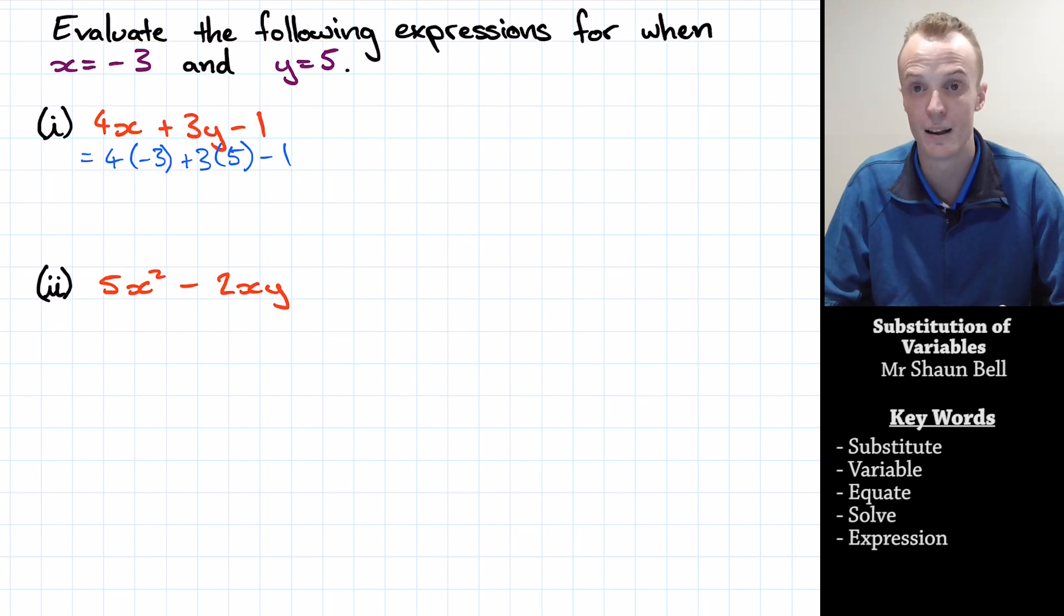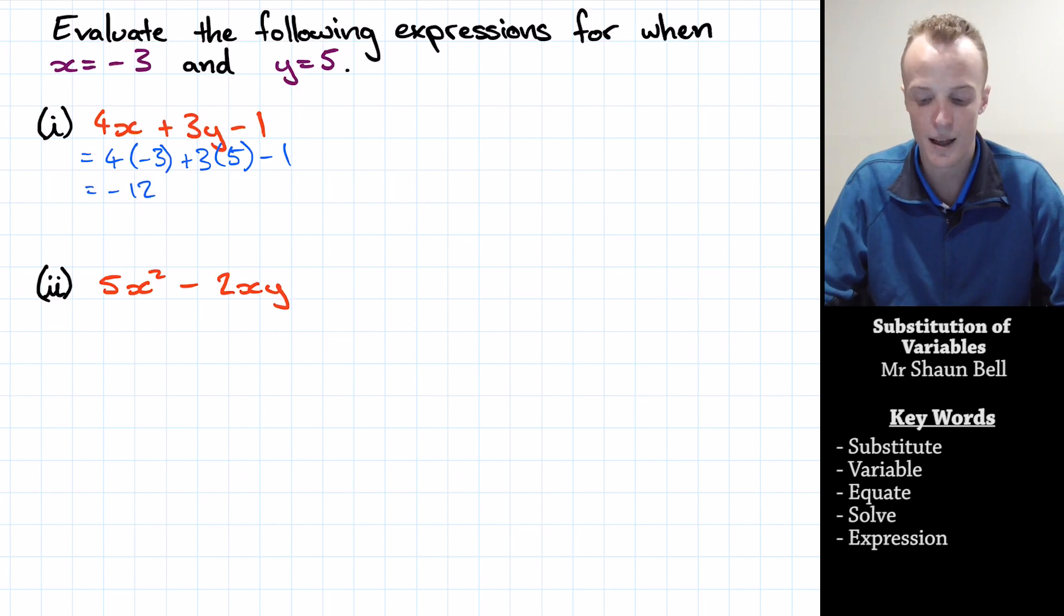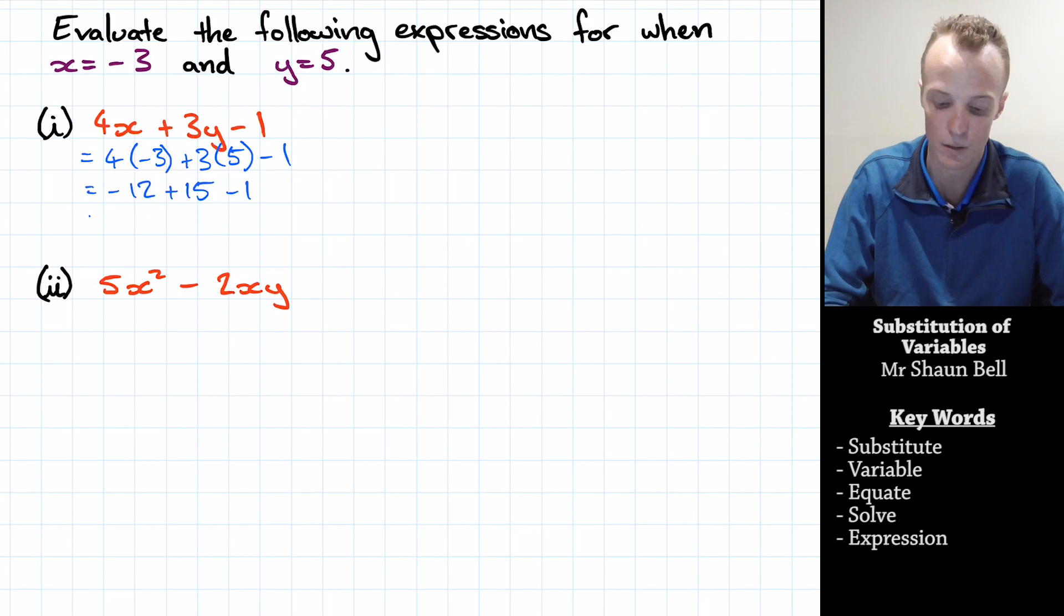So this is 4 times negative 3, which is negative 12. Plus 3 times 5, which is 15. Subtract 1. Now negative 12 plus 15 will get us to positive 3. Positive 3 subtract 1 will be positive 2. So our answer is equal to 2.